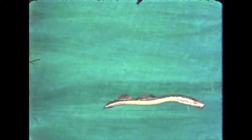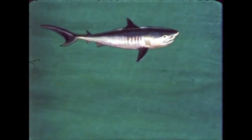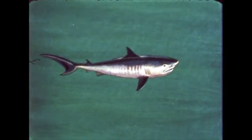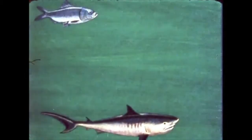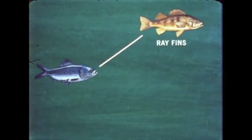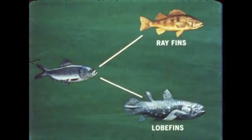The lampreys and sharks have skeletons of cartilage. But the remaining group of fish are the bony fish, with backbone and skeletons actually made of bone. The modern bony fishes are divided into two distinct types: the ray fins and the lobe fins.